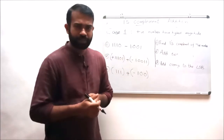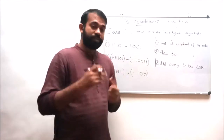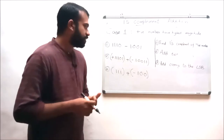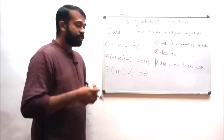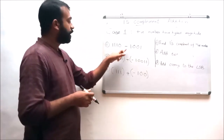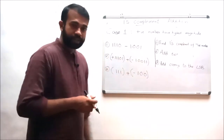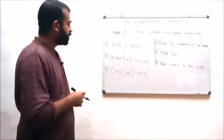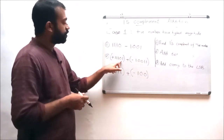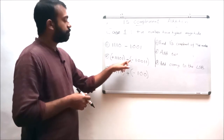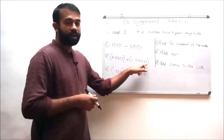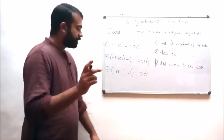Dear students, hope you understood this topic. Please go through the assignment questions. The first question is 1110 minus 1001. The second question is: add 11101 with minus 10011. In the upcoming lecture we will discuss Case 2 of the ones complement addition or subtraction method. See you soon — goodbye, thank you and all the best.